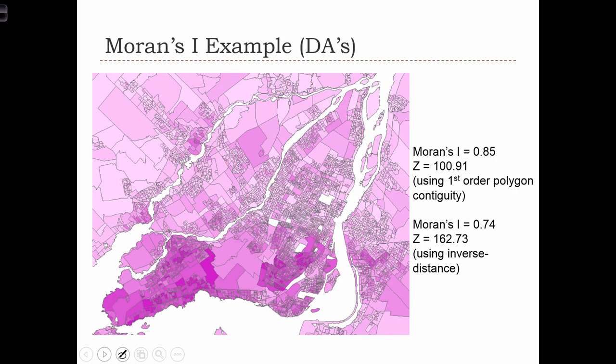This is an example of Moran's I for dissemination areas — like census block groups in Canada — in the city of Montreal. Here, the color of the map is darker for neighborhoods where English is spoken, and lighter in neighborhoods where English is spoken less. We see that the west side of the island of Montreal, what we call the west island, is predominantly English-speaking, while elsewhere in the region we predominantly have French-speaking people, so low English dissemination areas.